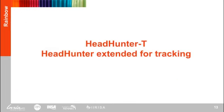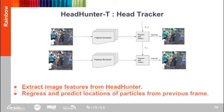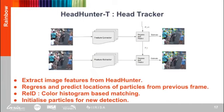We extend Headhunter with a particle filter framework and a color histogram-based re-identification module for head tracking. The working principle of Headhunter can be summarized in four main steps. First, features for a given frame are extracted from Headhunter. Tracks initialized at previous frames are regressed based on the motion model and their locations in new frames are estimated based on their importance weight. Then, a color histogram-based re-identification is used to minimize identity switches. Finally, for proposals with no particle matches, new tracks are initialized in the current frame.